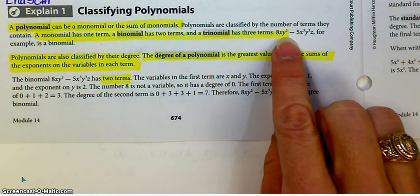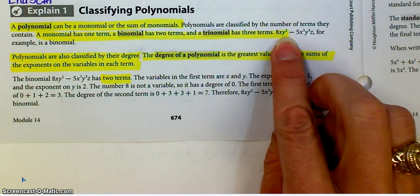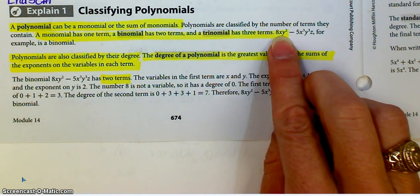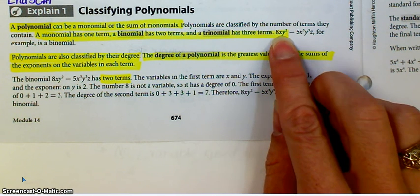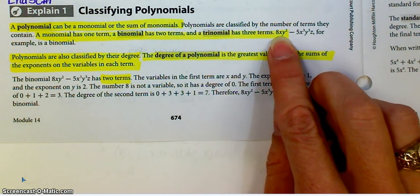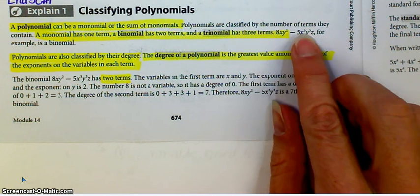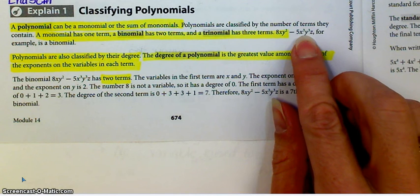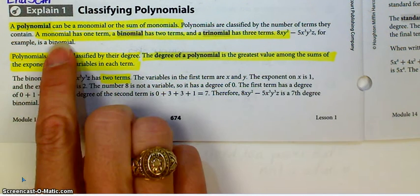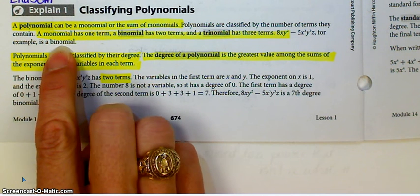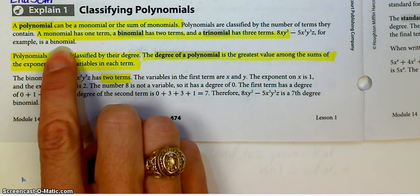So if they give you this, notice that terms are separated by plus or minus. There's one term, there's a second term. So this has two terms, therefore this one is considered a binomial.